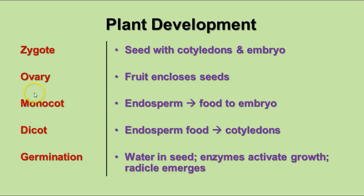In monocots, the endosperm — developed from the fertilization of the polar bodies — provides food for the embryo. In dicots, the endosperm food is contained in the two cotyledons, and they emerge from the ground. In monocots, the cotyledon stays below ground. Germination occurs when water gets into the seed, activating enzymes that trigger growth. The first part that emerges from the seed is the radicle, or the root.